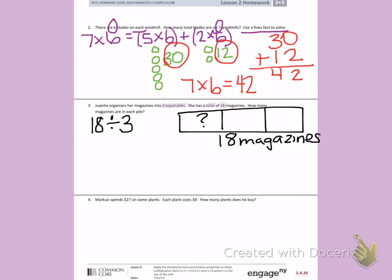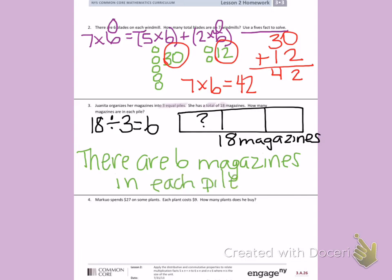So I'm going to skip count by threes until I get to eighteen: three, six, nine, twelve, fifteen, eighteen. If I look down at my fingers, I have six fingers showing. So I can write a sentence that says: there are six magazines in each pile.